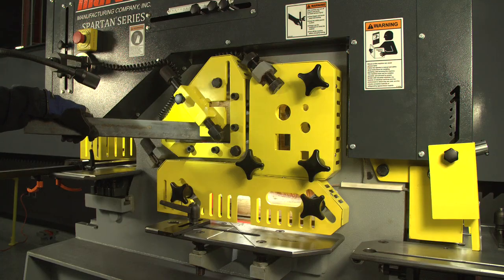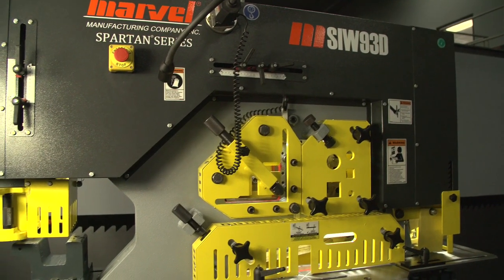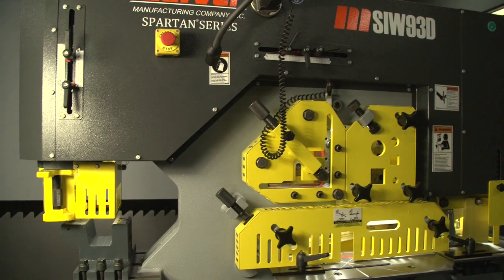This allows for a picture frame corner when mitering angle iron. The angle iron shear has eight usable corners for maintaining a continuously sharp blade.